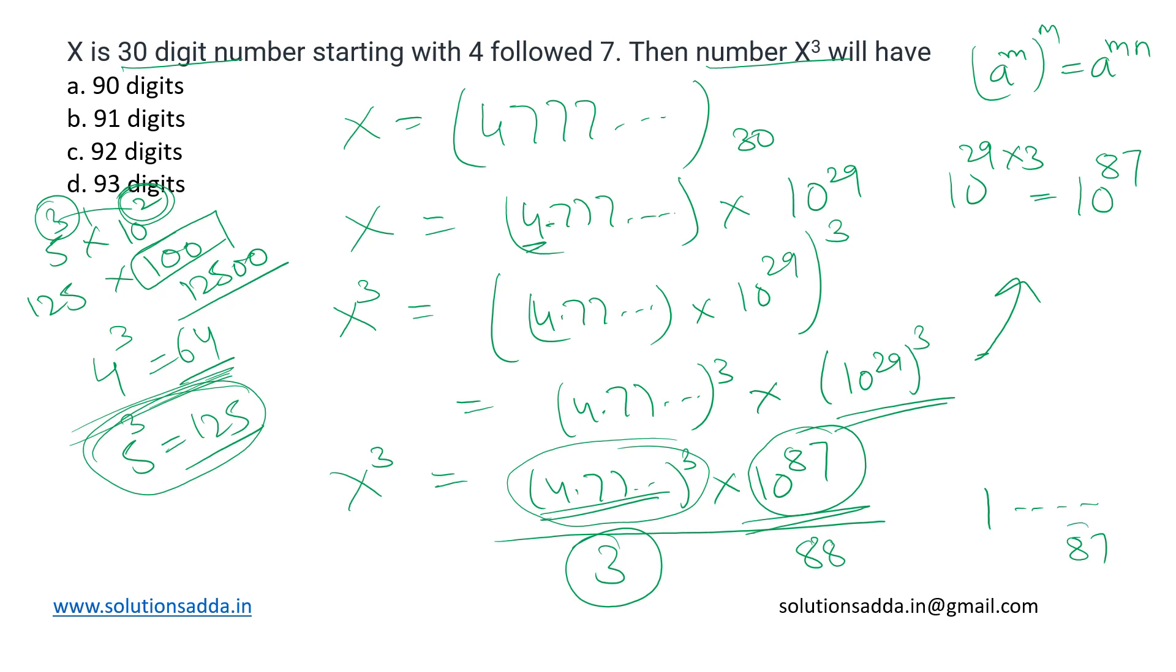How many zeros are there in 10⁸⁷? 87 zeros — 1 followed by 87 zeros. So the number of digits X³ will have is 3 plus the number of zeros from this number, which is 87. The sum is 90. That would be our answer for the number of digits in X³, so option A.